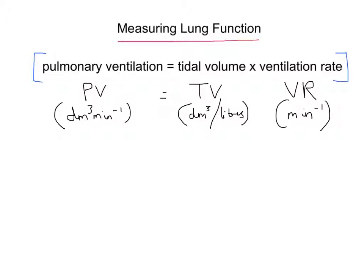Let's put an example in place. Tidal volume is usually about 0.4 decimetre cubed. At rest, the average person takes about 15 breaths a minute, so a ventilation rate of 15. With a tidal volume of 0.4 and a ventilation rate of 15, that gives a pulmonary ventilation of 6 — and remember we need the units — 6 decimetre cubed per minute. That's how you use that formula.